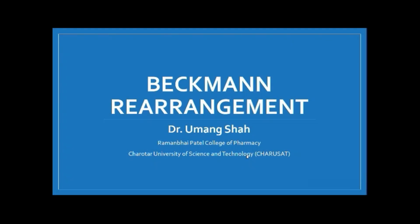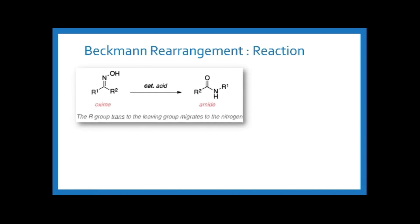Let us start with Beckmann rearrangement — its reaction and mechanism. The starting material used in Beckmann rearrangement is an oxime. An oxime is formed when a carbon is attached to a nitrogen with a double bond, and that doubly bonded nitrogen is attached with a hydroxy group. This whole group is known as an oxime group, and under catalytic acidic conditions it is converted into an amide.